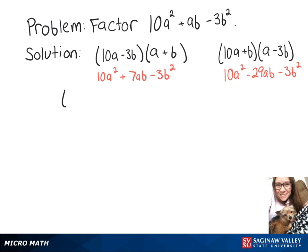So let's try just switching the positive and the negative sign. So let's write 10a plus 3b and a minus b. And then like we did above, we'll flip-flop the two. So 10a minus b times a plus 3b.